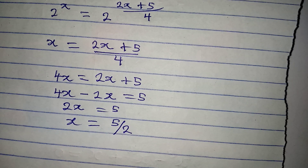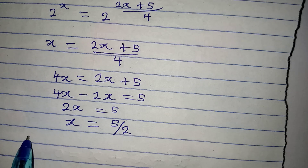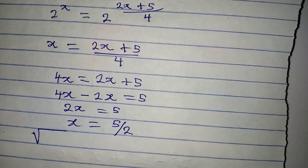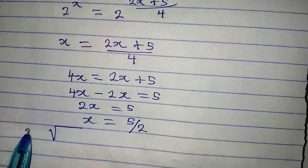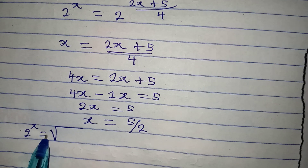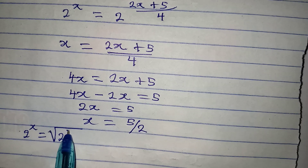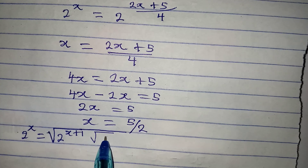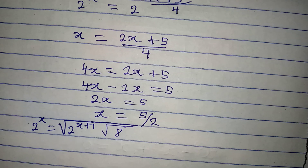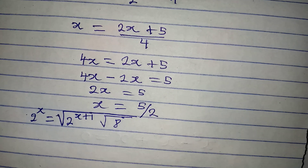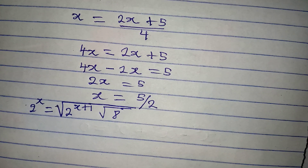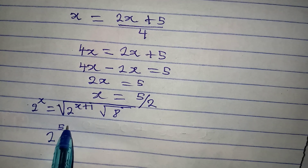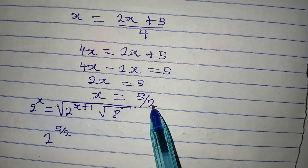The original equation is 2 to the power of x equal to the square root of 2 to the power of (x+1) times the square root of 8. Let's substitute the value of x. On the left-hand side we'll have 2 to the power of 5/2, because x is 5/2.